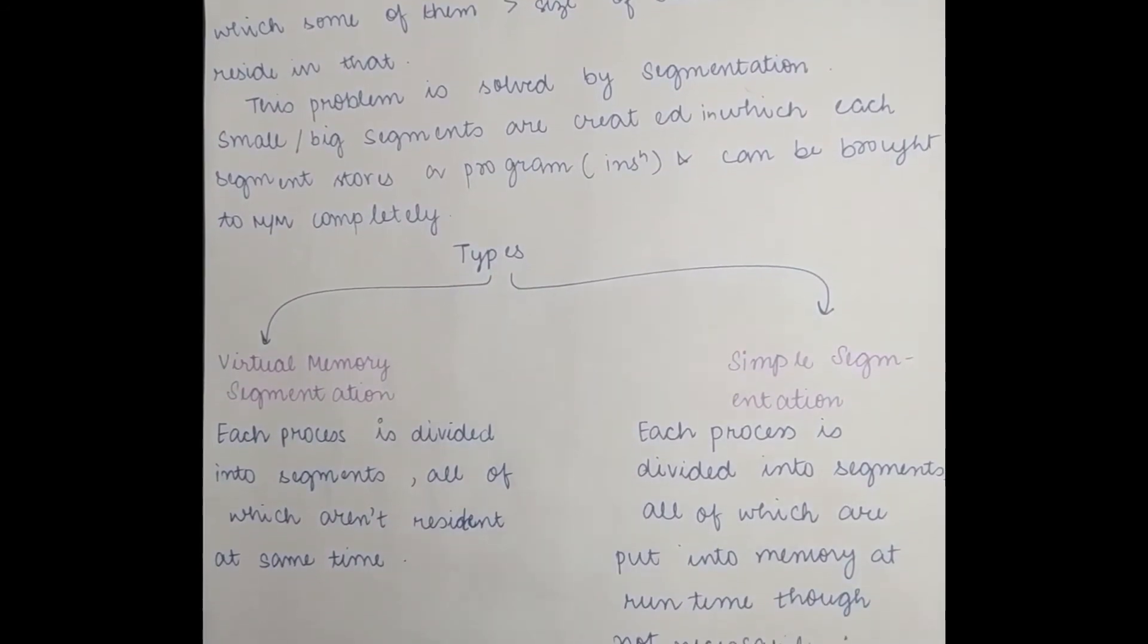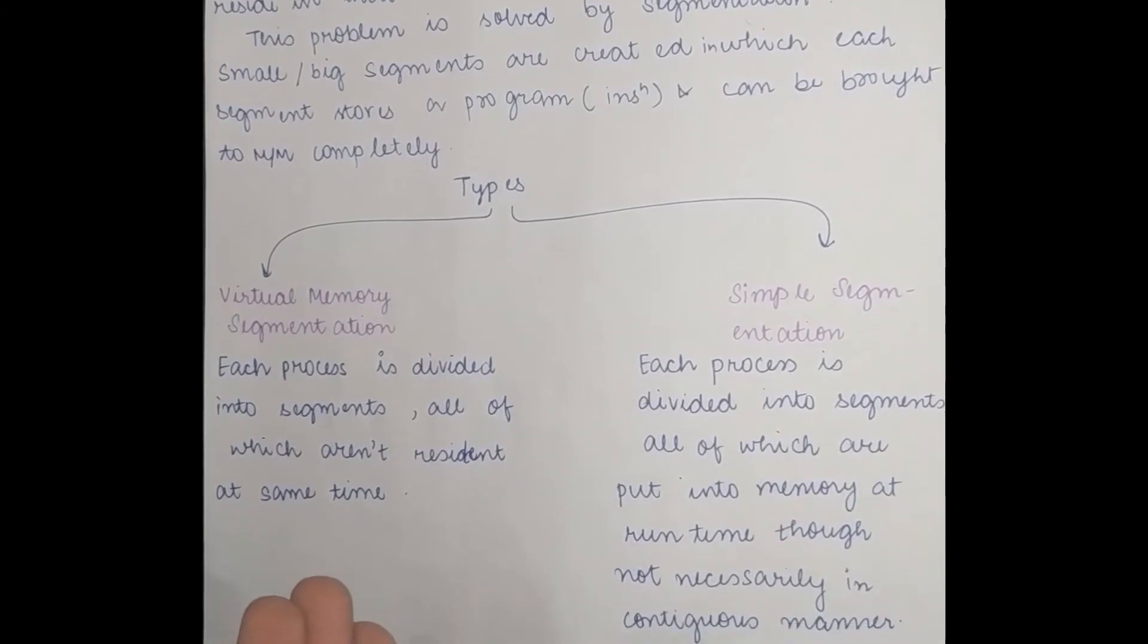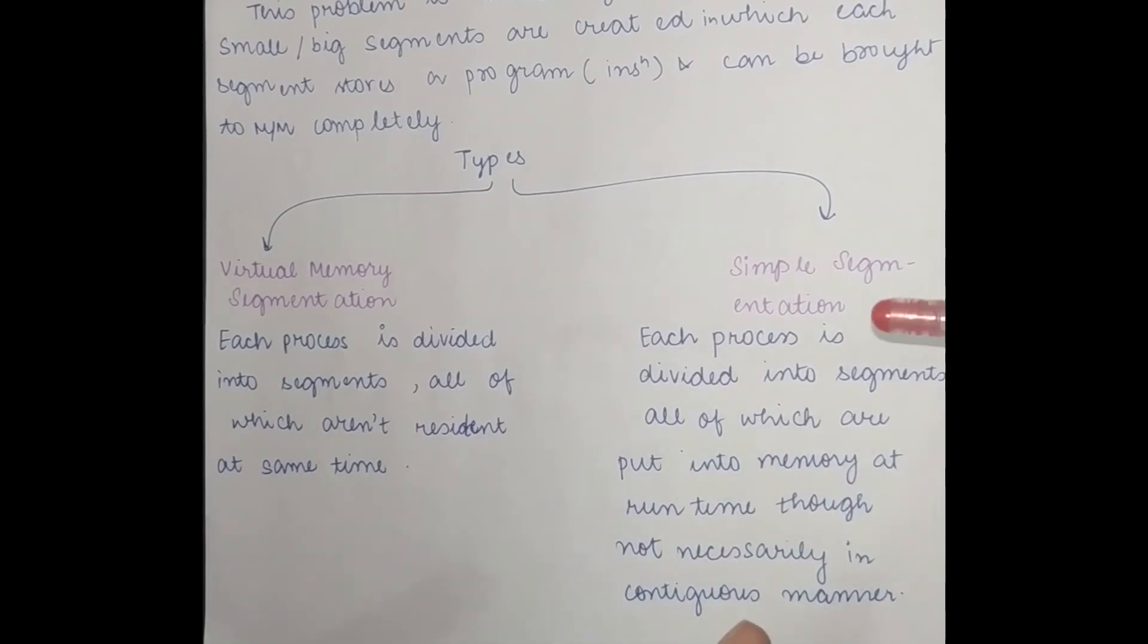If the process is big, it can allocate them in a large segment. And if the small process is small, it can allocate them in a small segment. So basically there are two types of virtual segmentation: virtual memory segmentation and simple segmentation.